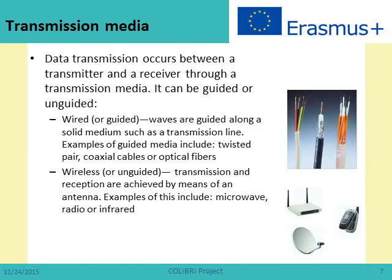In a wireless transmission medium, transmission is achieved by means of an antenna — an antenna at the transmitter and an antenna at the receiver, or multiple receivers in point-to-multipoint cases. Examples of wireless transmission media are microwave links, radio links, and infrared communication.